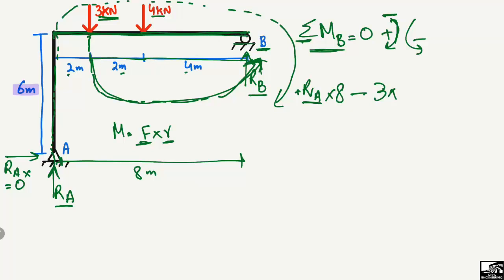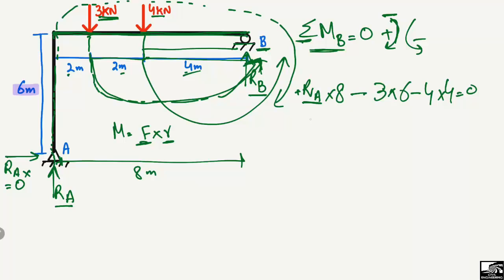The next force creating a moment about point B is the 4 kilonewton load, also acting downward. It creates an anti-clockwise moment about point B, so it is again taken as negative: minus 4, multiplied by its moment arm of 4 meters, equal to zero.